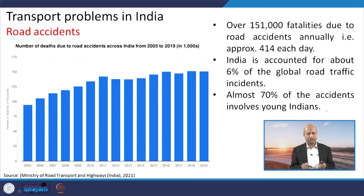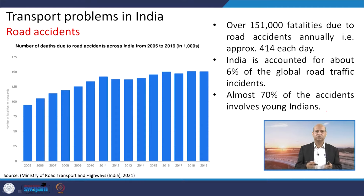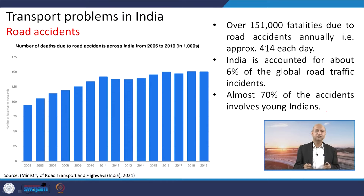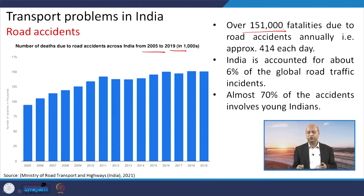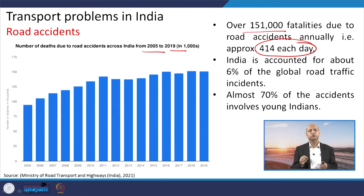This congestion situation is the direct outcome of a high number of privately owned vehicles and very little use of public transportation. A very negative aspect of this huge growth in privately owned vehicles combined with insufficient infrastructure development is road accidents. From 2005 to 2019, around 151,000 fatalities occurred annually — that is approximately 414 people dying each day due to road accidents. This is a very serious and grim situation requiring urgent attention.